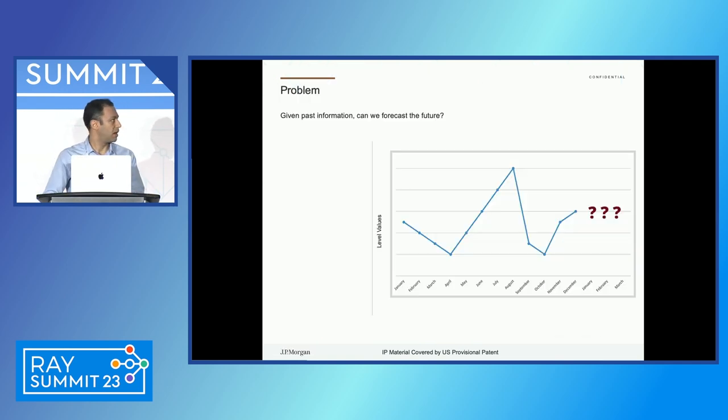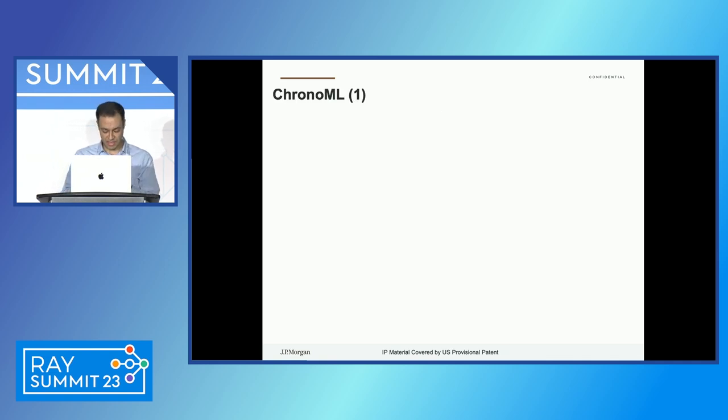Let me start by saying what the problem is. Very simple. Assume that we have a time series. Right now, I'm showing a very basic one, one-dimensional, monthly, but it could be multidimensional. The resolution could be different from a monthly one. But the question is, if we know the past information, how can we forecast the future? A very basic question, but the implications would be totally hard.